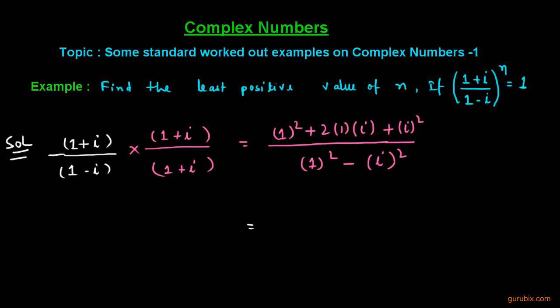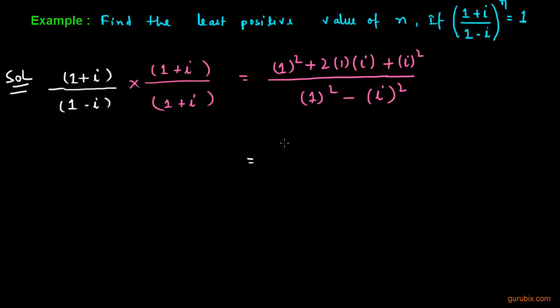If we further solve it, then we get 1 plus 2 iota and here is minus 1 because iota square is equal to minus 1 and here we have 1 and here we have positive 1.